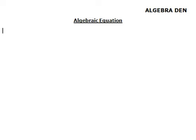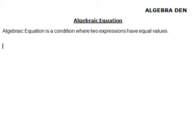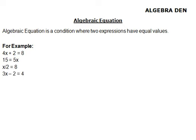Algebraic Equation. An algebraic equation is a condition where two expressions have equal values. For example: 4x plus 2 is equal to 8; 15 is equal to 5x; x by 2 is equal to 8; 3x minus 2 is equal to 4. All these are algebraic equations.